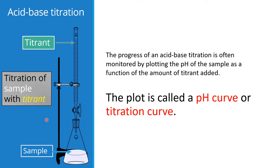In order to find out the pH at equivalence point, we may follow the progress of acid-base titration by monitoring the pH change — by plotting the pH value of the sample as a function of the amount of titrant added. This plot is called a pH curve, and since we use titration to do this it may also be called a titration curve. We plot the pH of the sample, so if the sample is an acid the pH will start from a low value, and if the sample is a base the pH will start from a high value. We plot the pH change against the amount of titrant added.